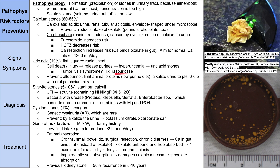There is a treatment for this: Rasburicase. Other ways to prevent uric acid stones include giving allopurinol — a medicine also used for gout — and limiting animal proteins with a low-purine diet. Beer also predisposes people to both uric acid stones and gout. You can also alkalize the urine to prevent uric acid stones, targeting a pH of 6 to 6.5 with oral potassium citrate.